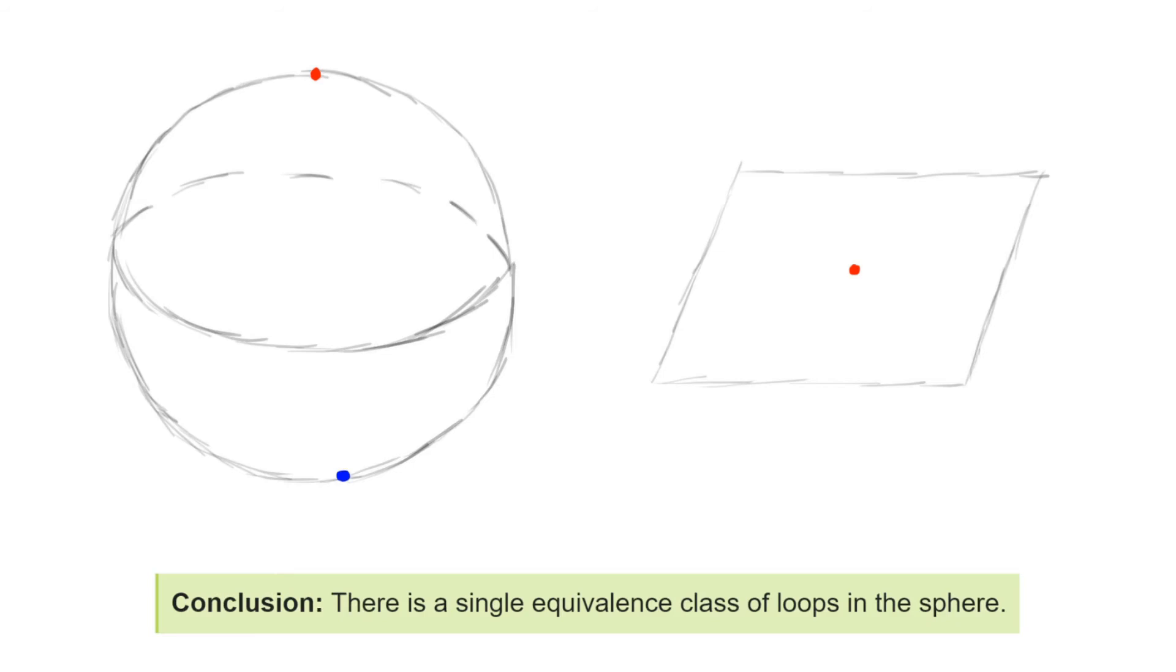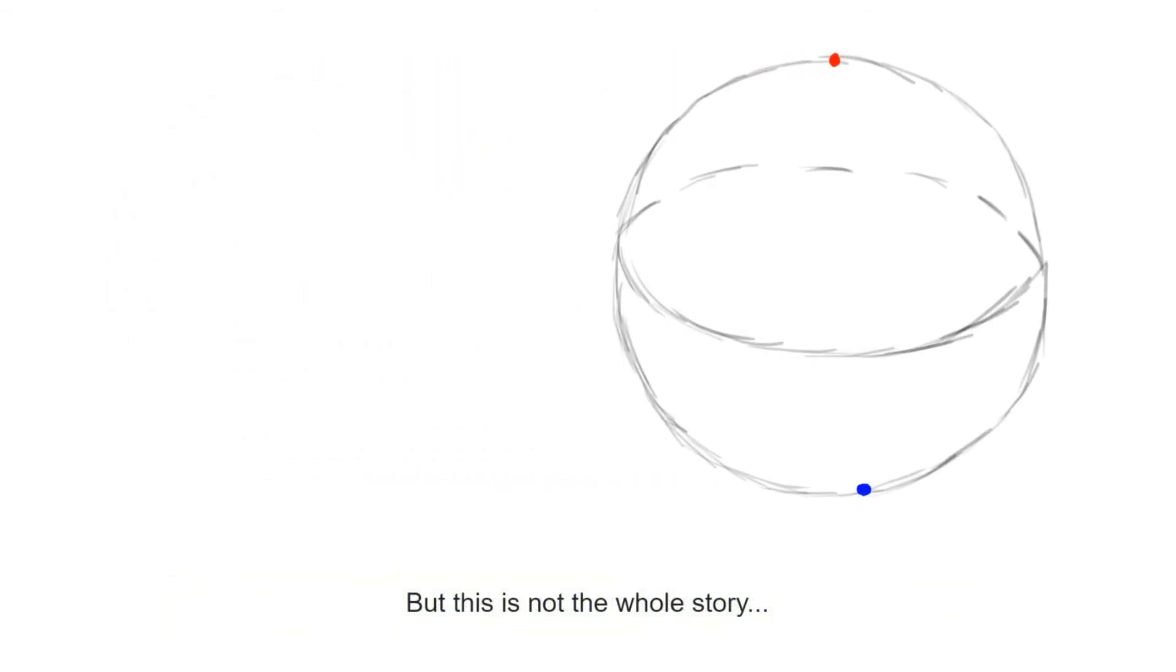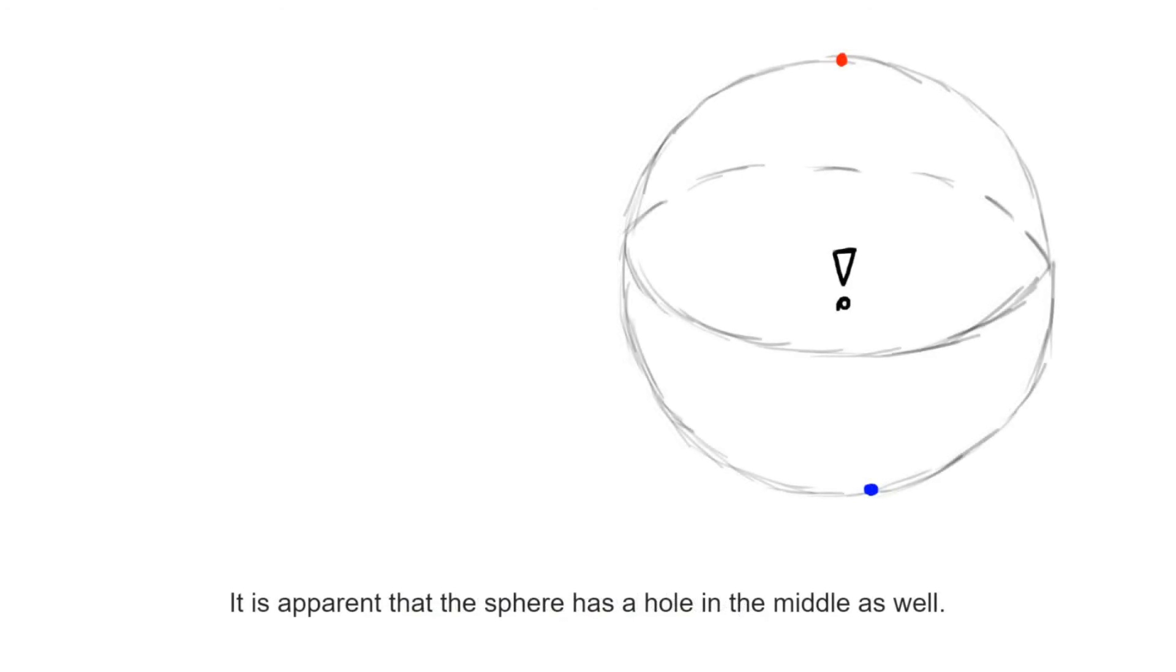Let us recap the situation. It seems pretty clear that the sphere has a hole in the middle. However, we've analyzed loops and we've seen that there's a single equivalence class. This implies that the loops are not getting stuck due to the presence of the hole, they are not tied to it.